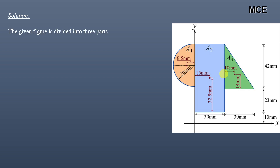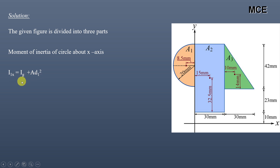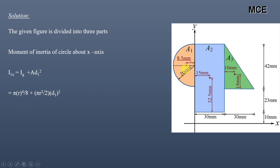The moment of inertia of the semicircle about the x-axis is: Ix = Ig + A·d₁². Ig is the moment of inertia of the semicircle about its own centroidal x-axis. It equals πr⁴/8 plus the area of the semicircle, πr²/2, multiplied by the square of the distance between the centroidal axis of the semicircle and the x-axis.